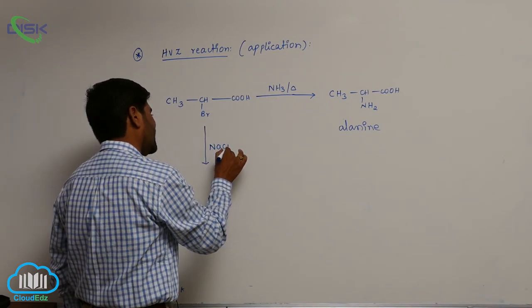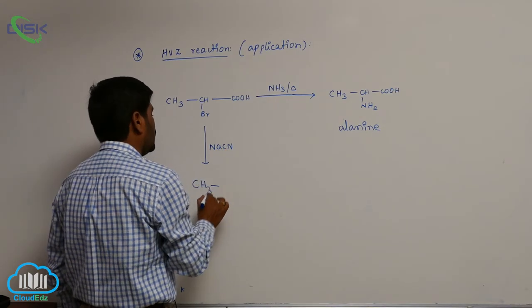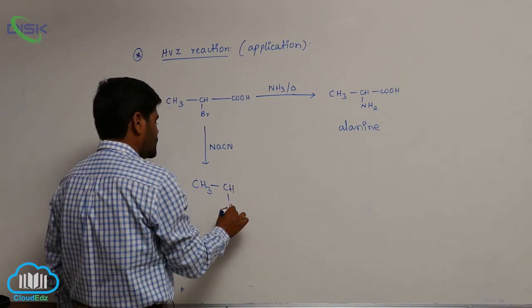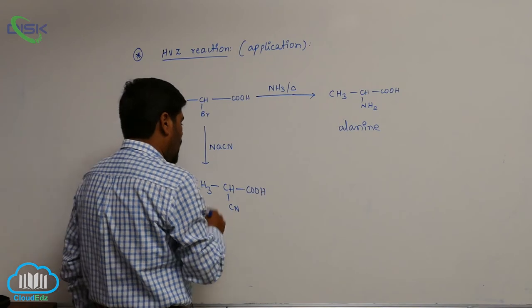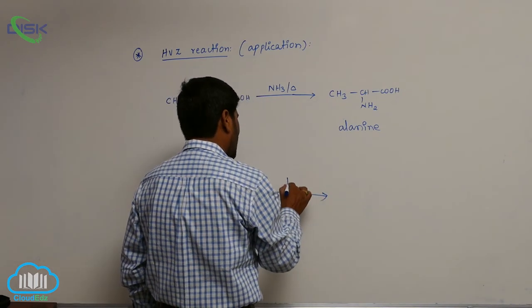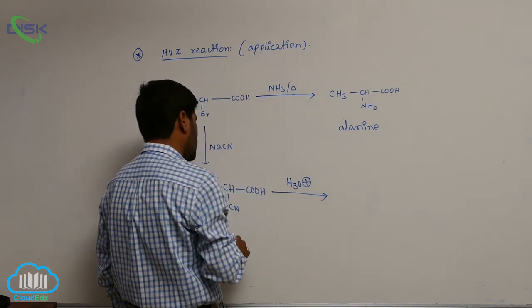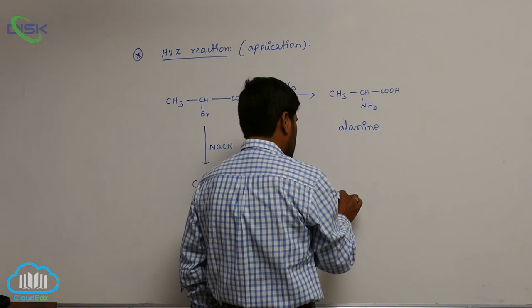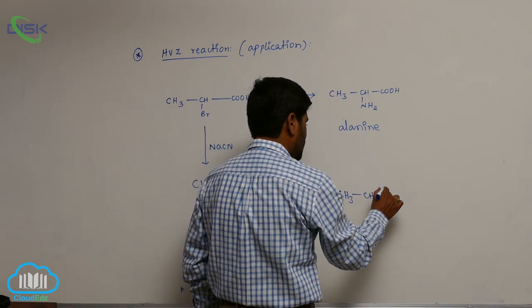With sodium cyanide, it forms alpha cyanopropionic acid: CH3 CH CN COOH. This on hydrolysis, this on acidic hydrolysis - cyanide always converts into carboxylic acid, so definitely it forms a dicarboxylic acid.